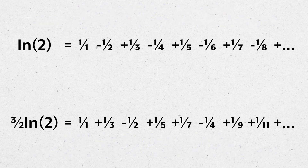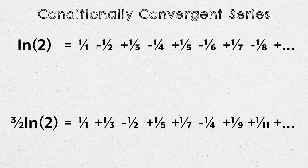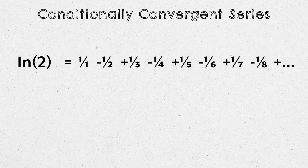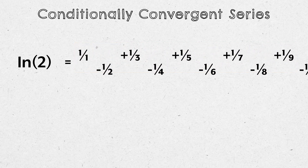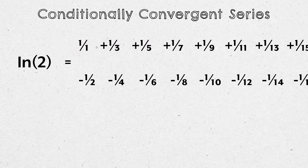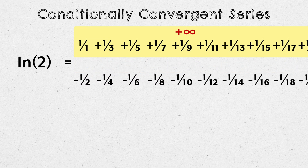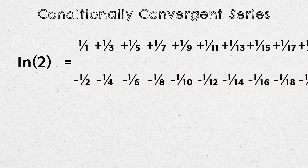These infinite series are conditionally convergent. What this means is that if all terms were positive, the series would not converge. The positive terms would add up to infinity, and the negative terms would add up to negative infinity.